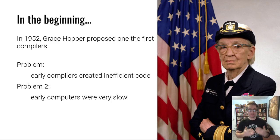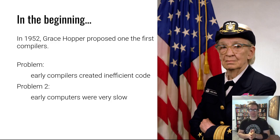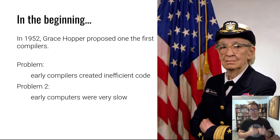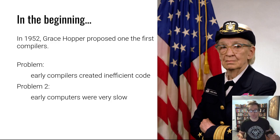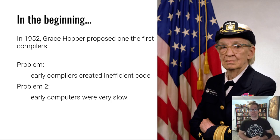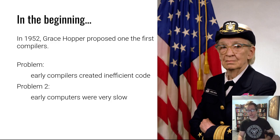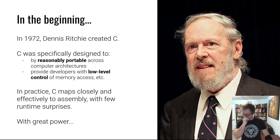COBOL was super important around Y2K, and it became popular in certain segments such as the financial sector. But it had problems - early compilers created very inefficient code. You'd write your program and the output wouldn't run very quickly. This was further compounded by the fact that early computers were slow. That's not a problem now - the Python interpreter, for example, is horrifically slow but still extremely popular.